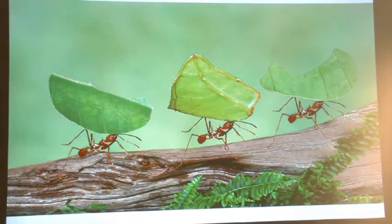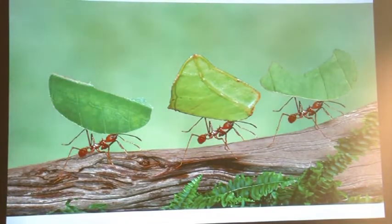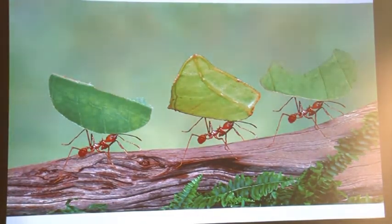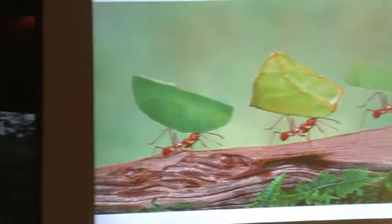We used to think ants were feeding off the leaves, but we came to realize they're actually bringing the leaves back as fodder to feed the fungus they're cultivating. They raise this fungus inside their massive nests underground and feed off the fungus instead. They've been doing this for somewhere around 40 million years. We've been doing agriculture for about 15,000 years — they've been doing it for about 40 million.